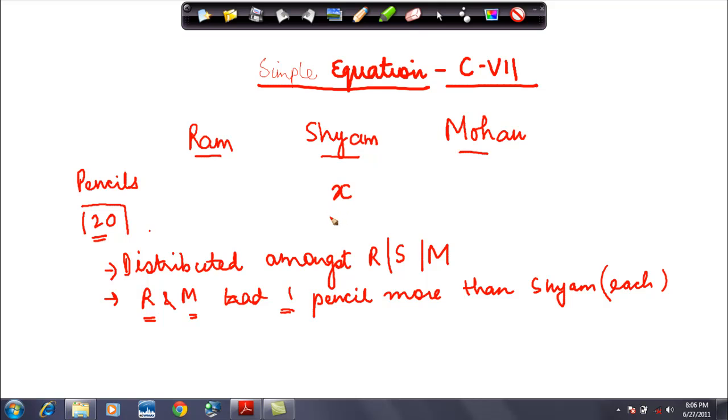X can be any number, but what I know here is I do not know what is the value of X. X could be any number and therefore X is called a variable. I do not know how many pencils were available with Sham, but I assume for a minute that the number of pencils available with Sham were X.